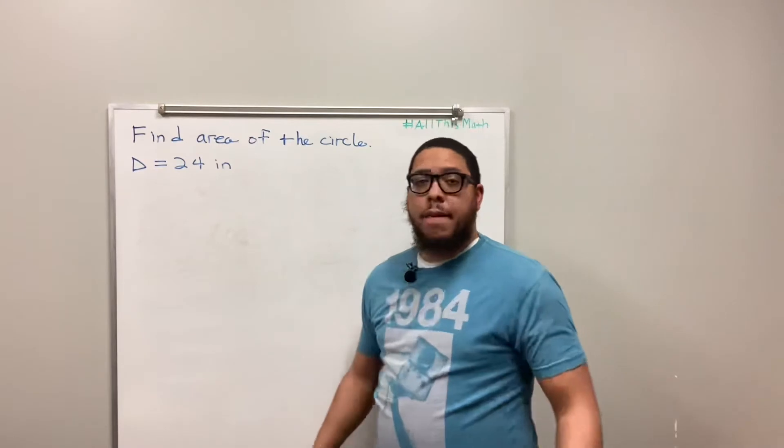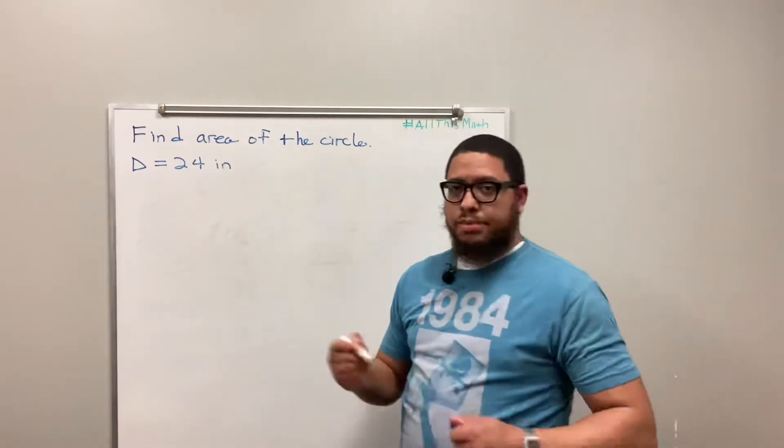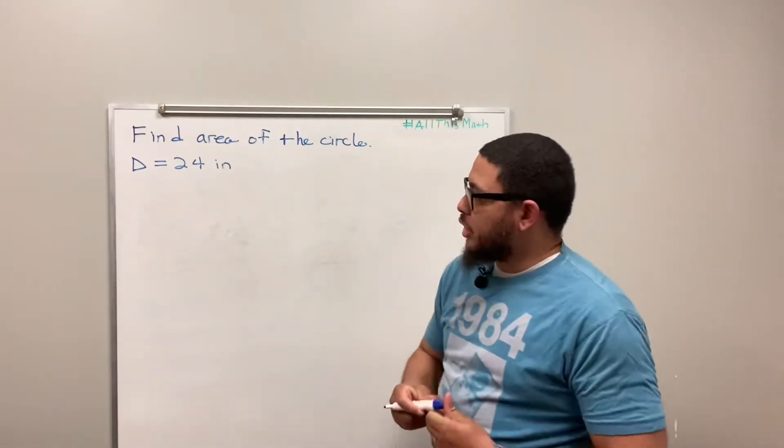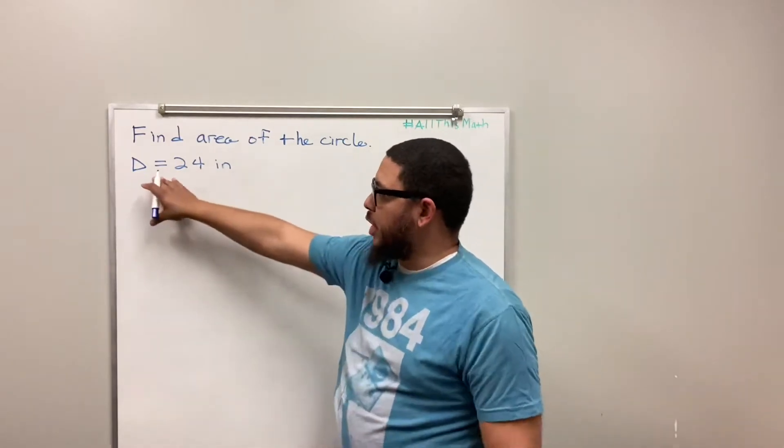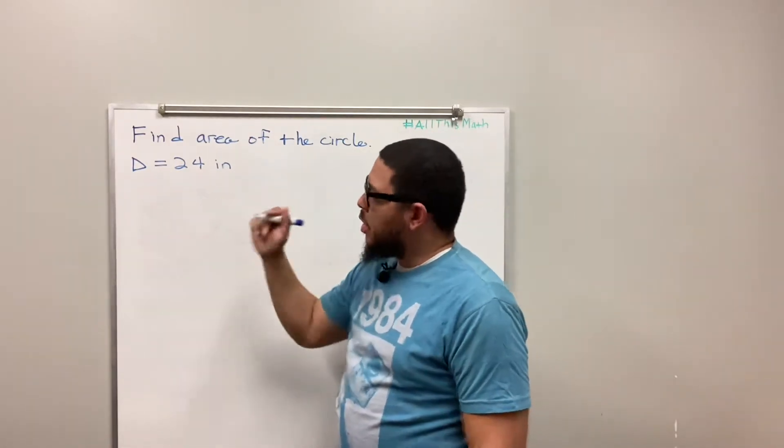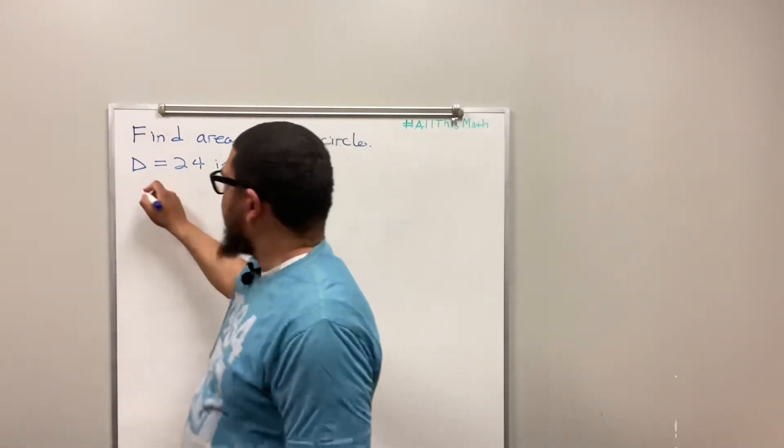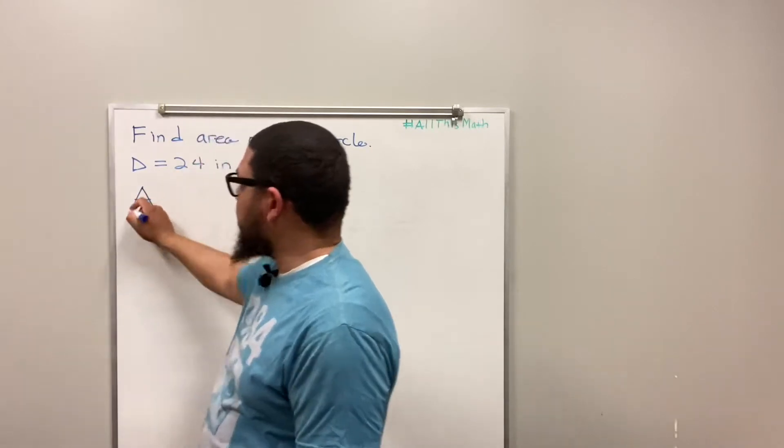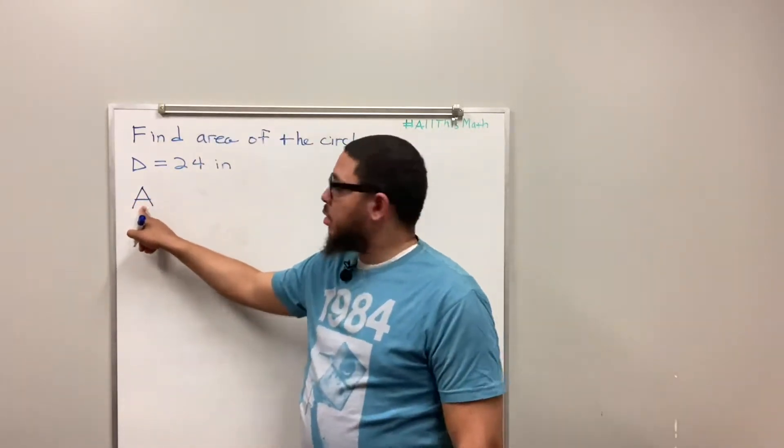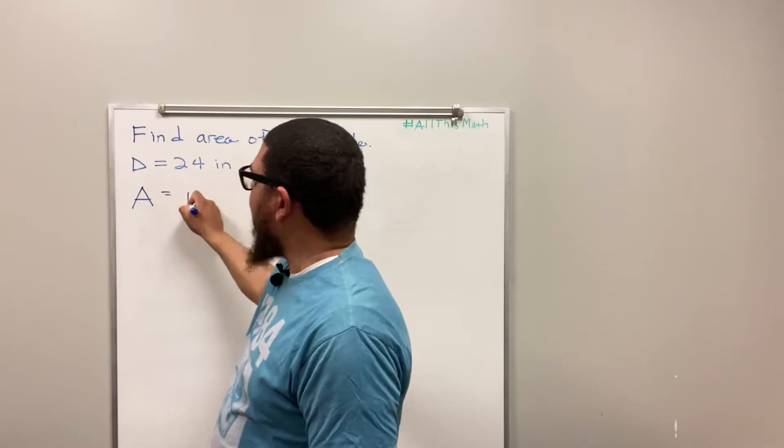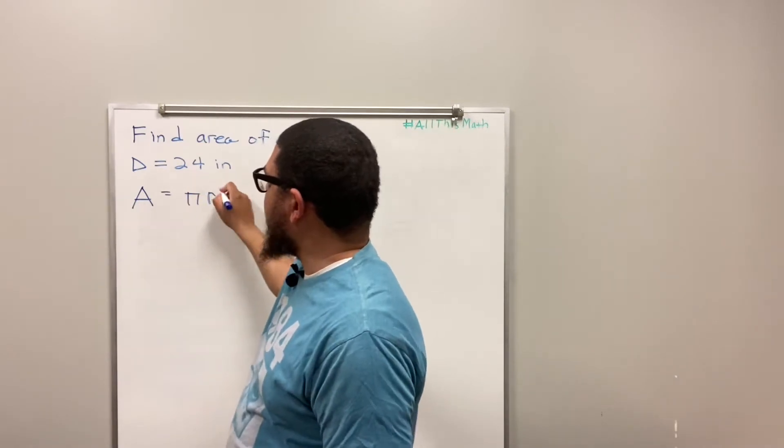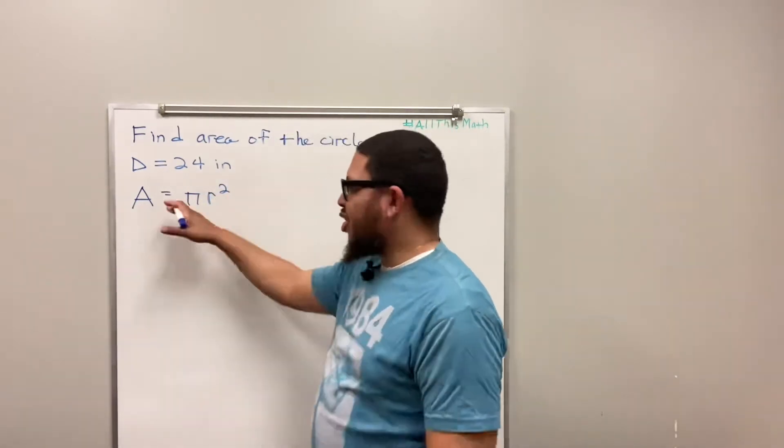So as I said, you should start out with the formula. Now, always write your formula down. We're giving some information right here that I'm going to talk about momentarily. But start out with your formula. The formula for the area, and I represent area with a capital letter A, is equal to pi times the radius squared.